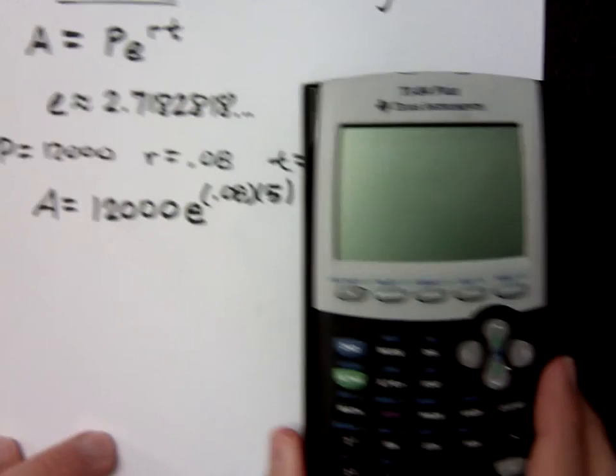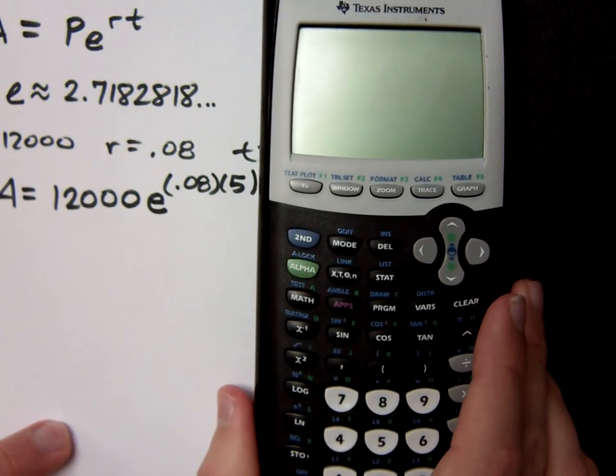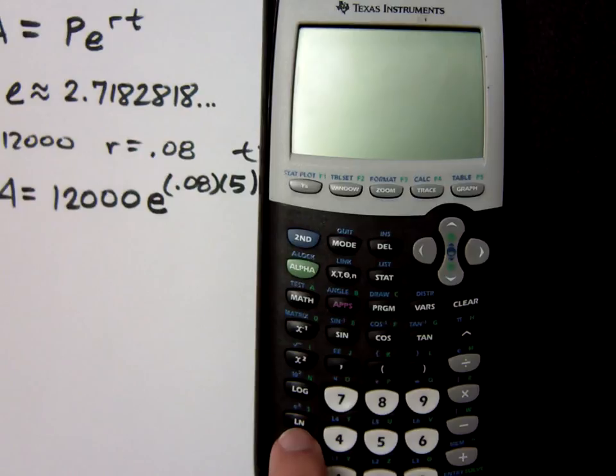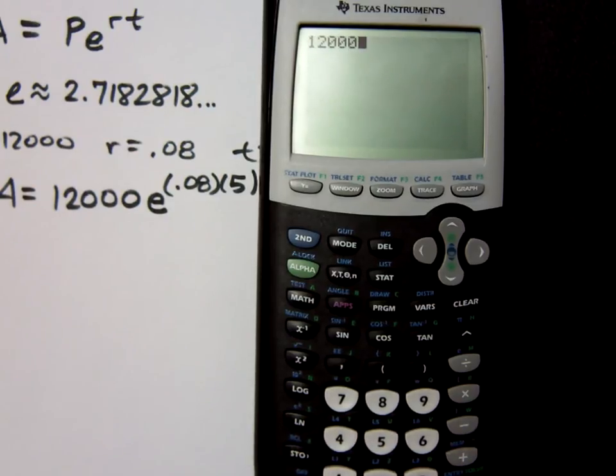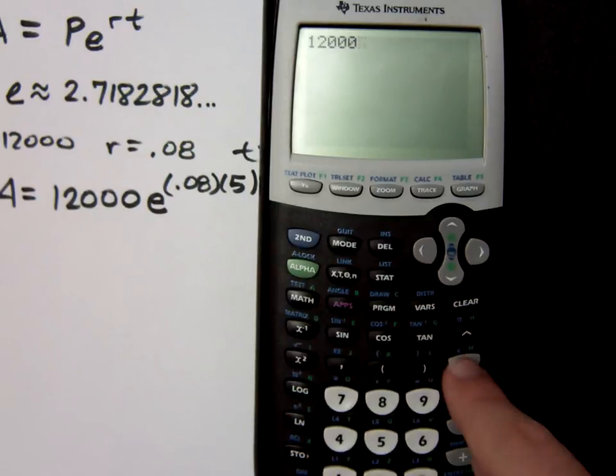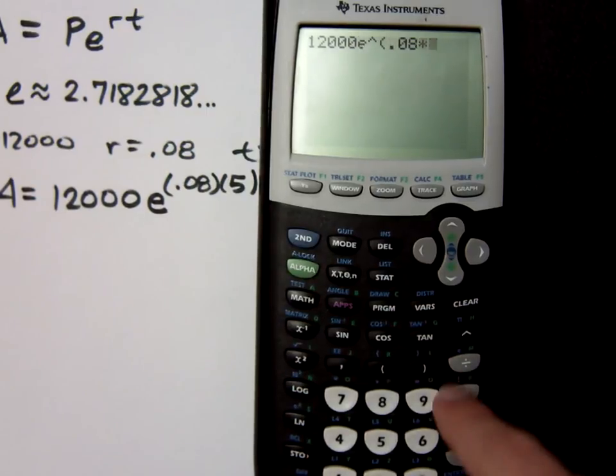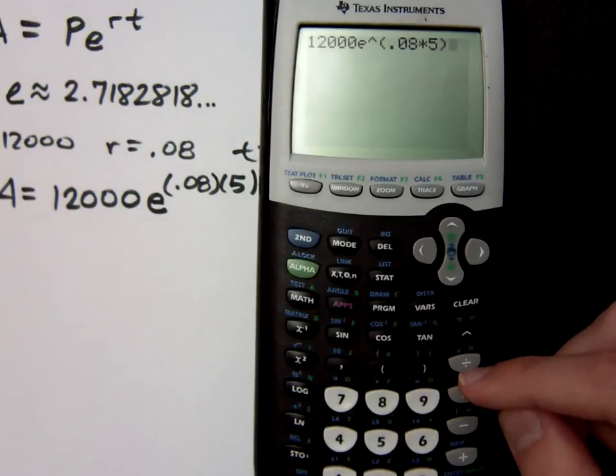Now, there's two different places for you to have e. You have e, which is right above your division, but you also have e, which is the inverse function for this ln, which we call the natural log, and we'll talk about that a little bit later. So, if I do 12,000e raised to the... I'm going to do 0.08... Is it already in there? It's the division, second. The e, if you do second division.